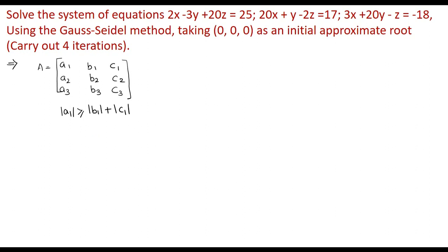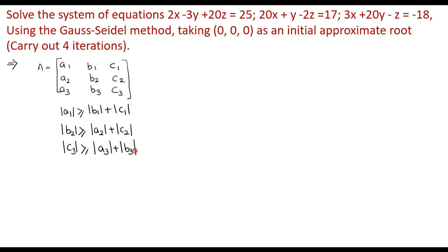In the first row, A1 should be greater than or equal to the sum of |B1| and |C1|. In the second row, the diagonal element is B2, so B2 should be greater than or equal to the sum of |A2| and |C2|. For the third row, the diagonal element is C3, so C3 should be greater than the sum of |A3| and |B3|. Thus, a diagonally dominant matrix means the modulus of the diagonal element is greater than or equal to the sum of the moduli of the other elements in that row.